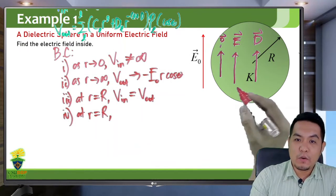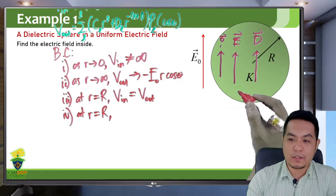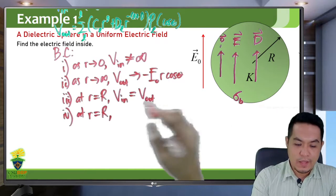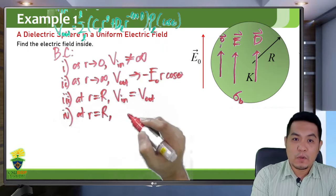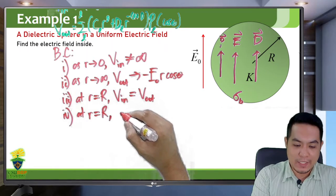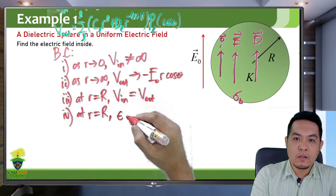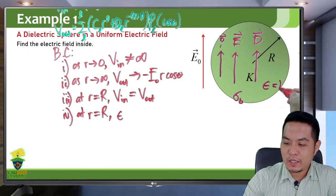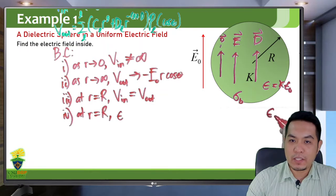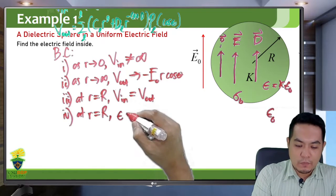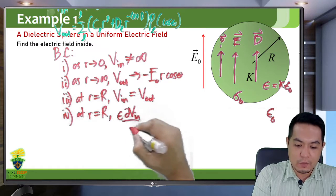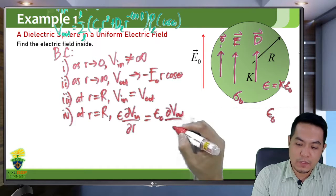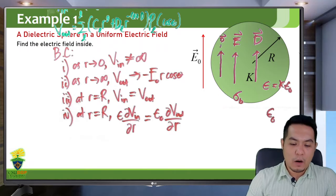At R equal to capital R, since there are no conductors and no free charges, only bound charges are at the surface. This means the perpendicular component of the displacement is continuous. So you have epsilon inside — which is K times epsilon naught — times the partial derivative of the potential inside with respect to R, equal to epsilon naught times the partial derivative of the potential outside with respect to R. These are our four boundary conditions.